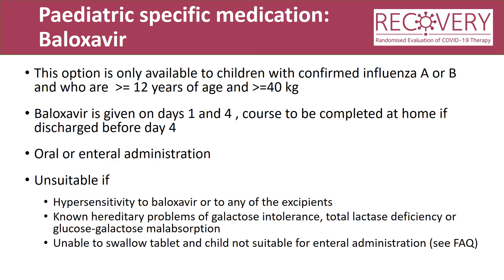Baloxavir is only open to children with confirmed influenza A or B who are greater or equal to 12 years of age and greater or equal to 40 kilograms. It's given twice — on days 1 and 4 — and if the child is discharged home before day 4, this should be provided as a TTO to be given at home. Baloxavir can be given orally or via enteral administration. It's unsuitable if there's hypersensitivity to baloxavir or any of the excipients, or if the child has a known hereditary problem of galactose intolerance, total lactase deficiency or glucose-galactose malabsorption. Baloxavir comes as a tablet; if the child is unable to swallow the tablet and is not suitable for enteral administration via an NG or NJ tube, the child will not be suitable for baloxavir, because the volume required as a suspension is very large.